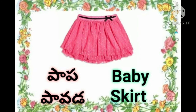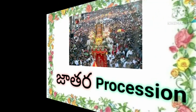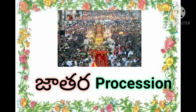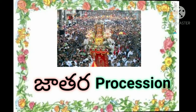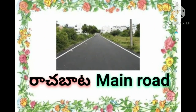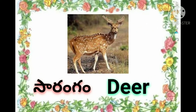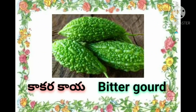Paapa, Paavada — baby skirt. Jatara — procession. Rachabata — main road. Sarangam — deer. Kaakara — bitter gourd.